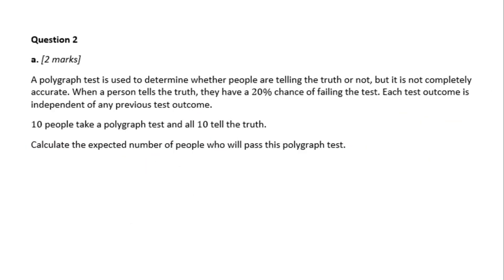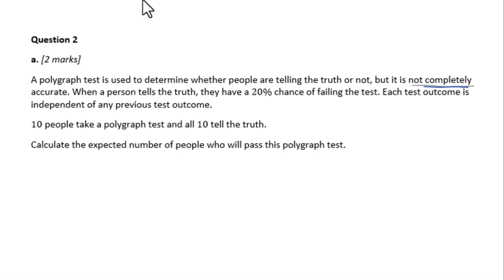Let's go to question 2. A polygraph test is used to determine whether people are telling the truth or not, but it is not completely accurate. When a person tells the truth, they have a 20% chance of failing the test. Test outcomes are independent. 10 people take the polygraph test and all 10 tell the truth.